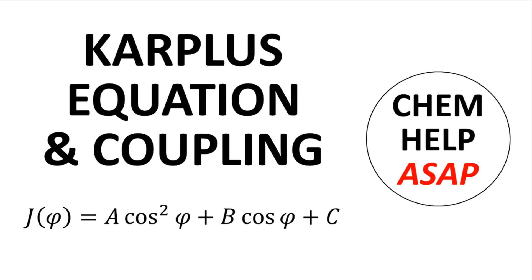Good day from Chem Help ASAP. This video highlights the Karplus equation, which shows the mathematical relationship between an observed J value and the dihedral angle between two neighboring vicinal hydrogens.